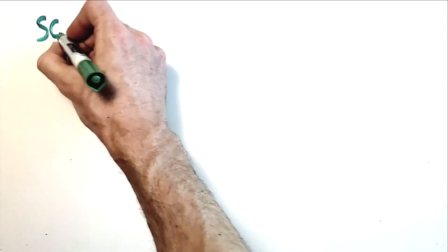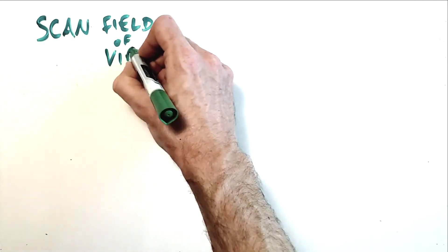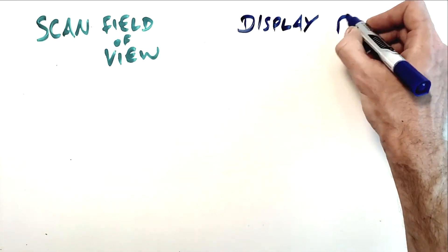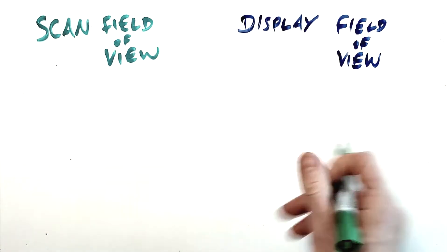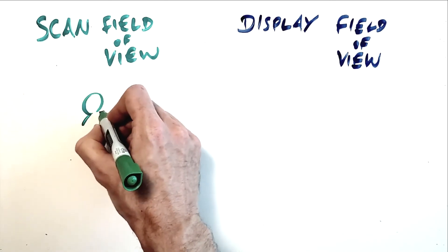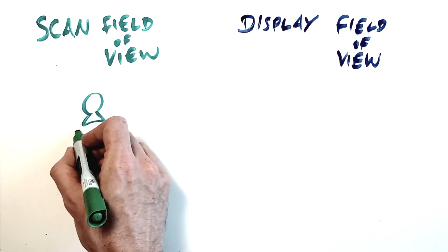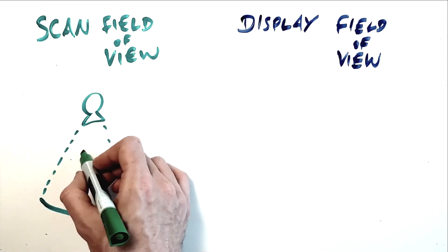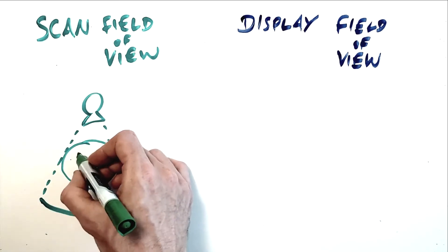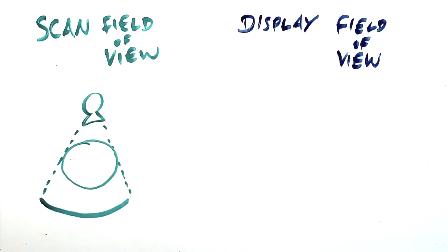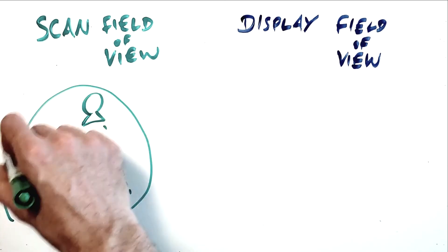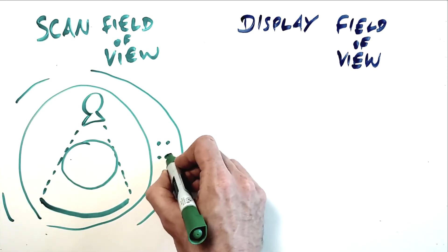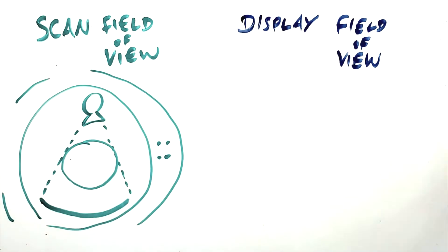Field of view in CT is described in two ways: scan field of view and display field of view. Scan field of view refers to the area within the gantry in which data is acquired. Most scanners will have at least two options for scan field of view, typically using a small scan field of view of around 25cm for head scans, and a large scan field of view of 40-50cm for body scans.